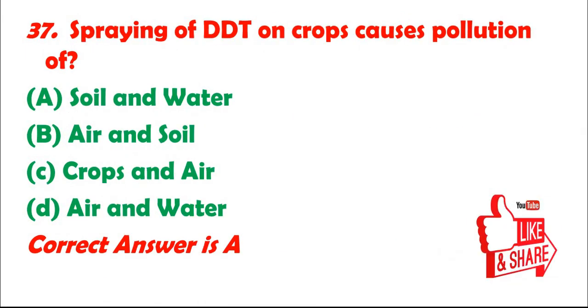Question 37: Spraying of DDT on crops causes pollution of: A. Soil and water. B. Air and soil. C. Crops and air. D. Air and water. Correct answer is A.